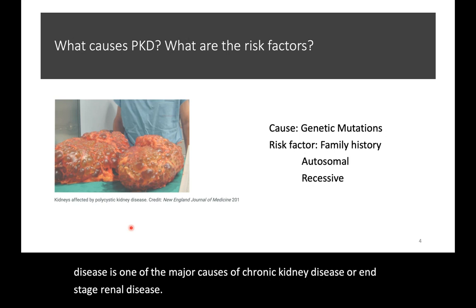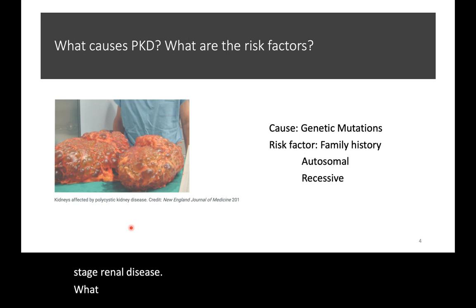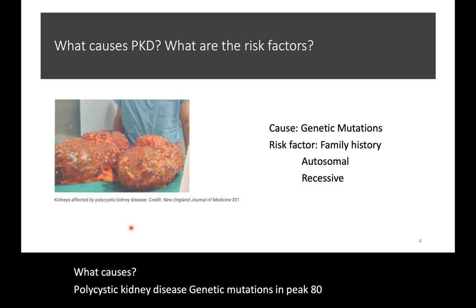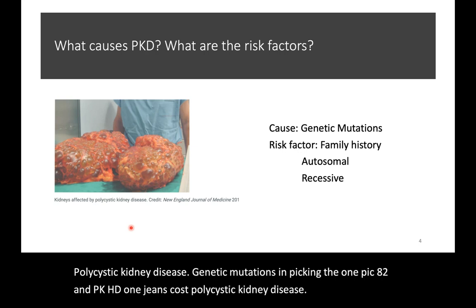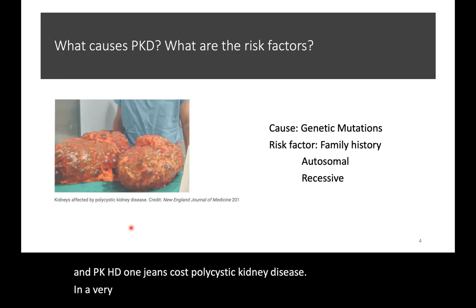What causes polycystic kidney disease? Genetic mutations in PKD1, PKD2, and PKHD1 genes cause polycystic kidney disease. In a very small number of cases, polycystic kidney disease is acquired.